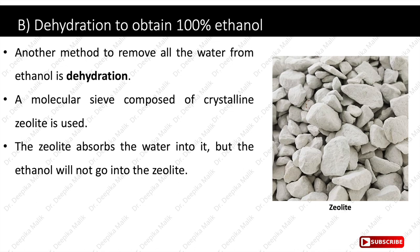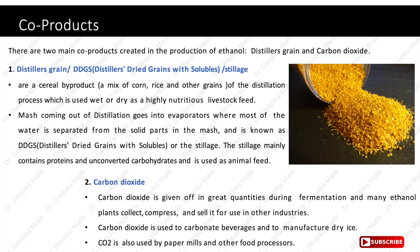There are two main co-products created in ethanol production. First is distillers dried grains with solubles (DDGS) or stillage — a cereal by-product of the distillation process used wet or dry as a highly nutritious livestock feed, mainly containing proteins and unconverted carbohydrates. Second is carbon dioxide, given off in large quantities during fermentation. Many ethanol plants collect, compress and sell it for use by other companies, such as carbonating beverages, manufacturing dry ice, and use by paper mills and food processors.